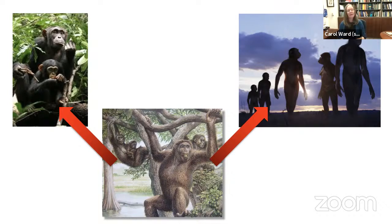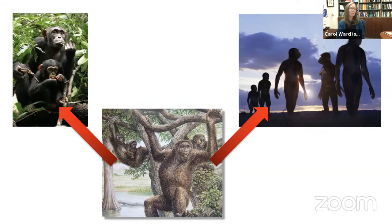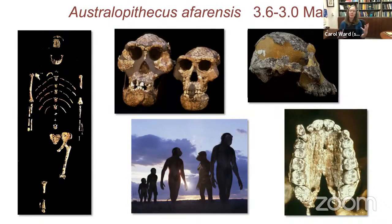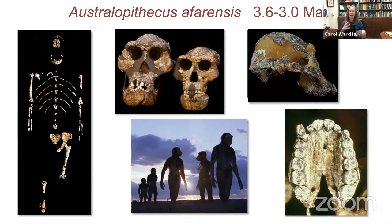We don't have a smoking gun yet, but the diversity of Miocene apes really does give us a different picture. As a plug for our West Turkana Paleo Project, co-organized with Frederick Kyalo Manthi of the National Museums of Kenya and Mike Plavcan from Arkansas, we've spent a lot of time working at Canapoi — where Meave Leakey's team identified Australopithecus anamensis in the 1990s. This is one of the earliest Australopith sites, close to 4.2 million years old.